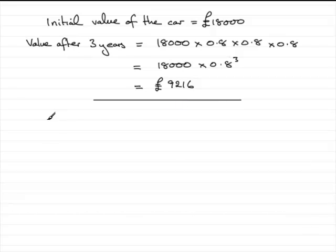The value after n years is calculated as 18,000 × 0.8^n. We need to find when this value is less than 1,000, so we need to solve this inequality for n.